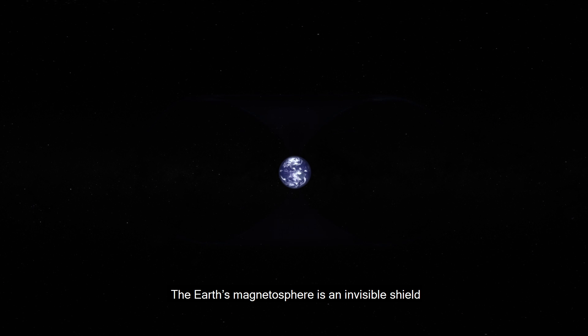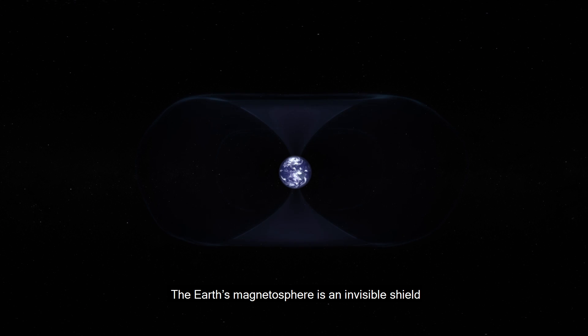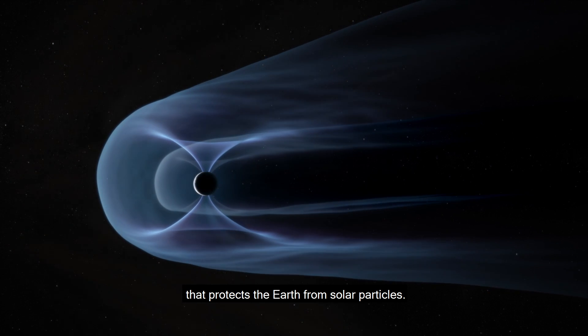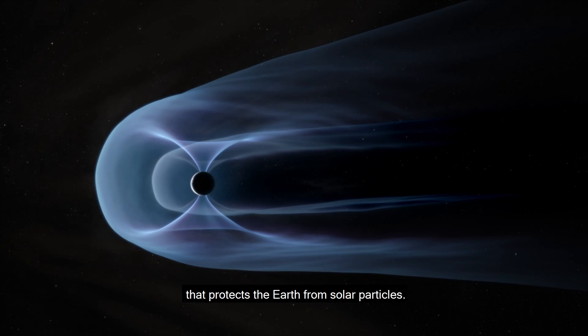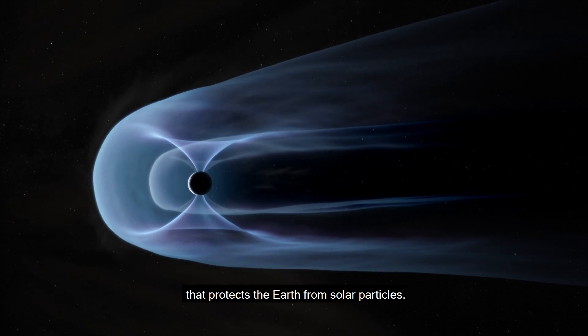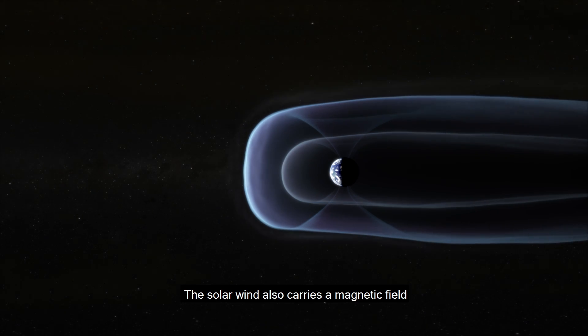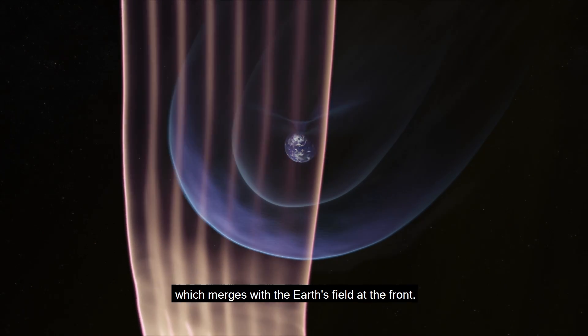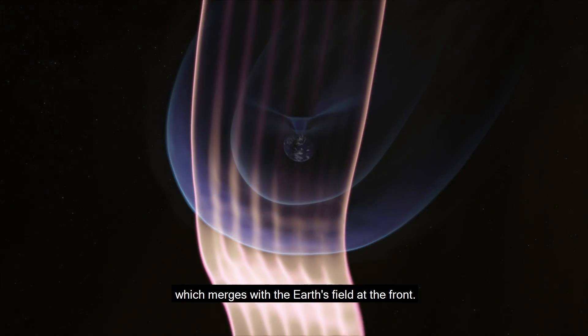The Earth's magnetosphere is an invisible shield that protects the Earth from solar particles. The solar wind also carries a magnetic field, which merges with the Earth's field at the front.